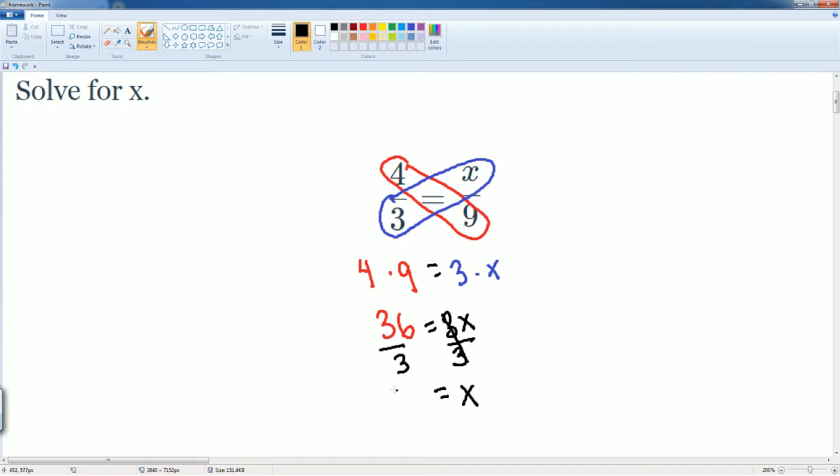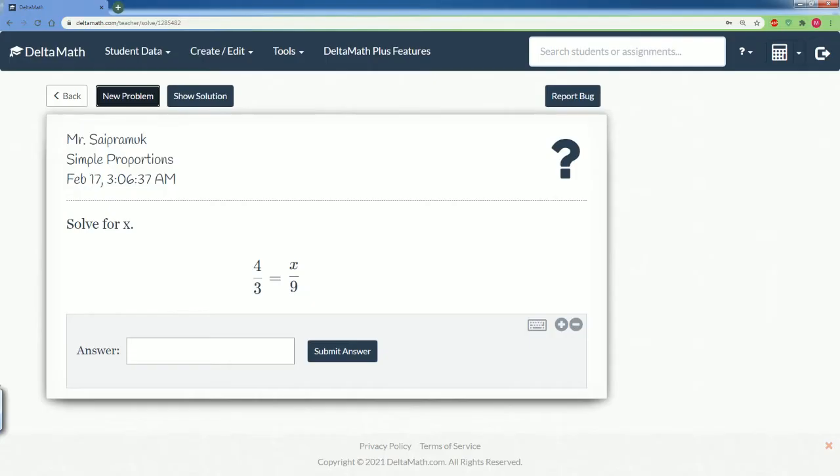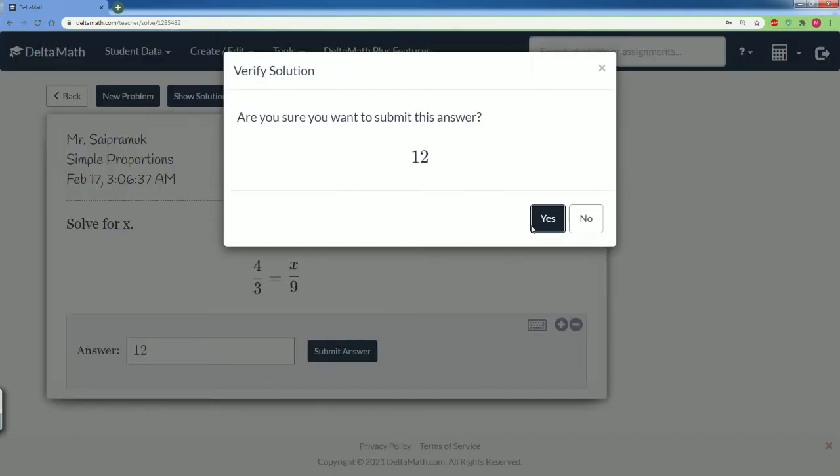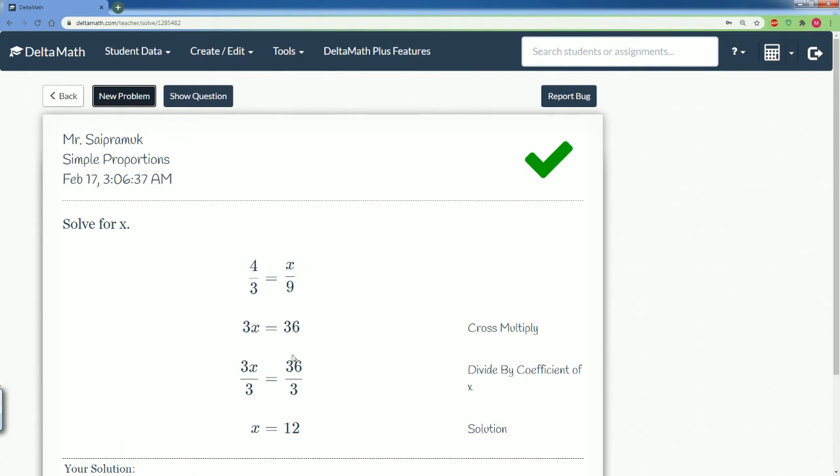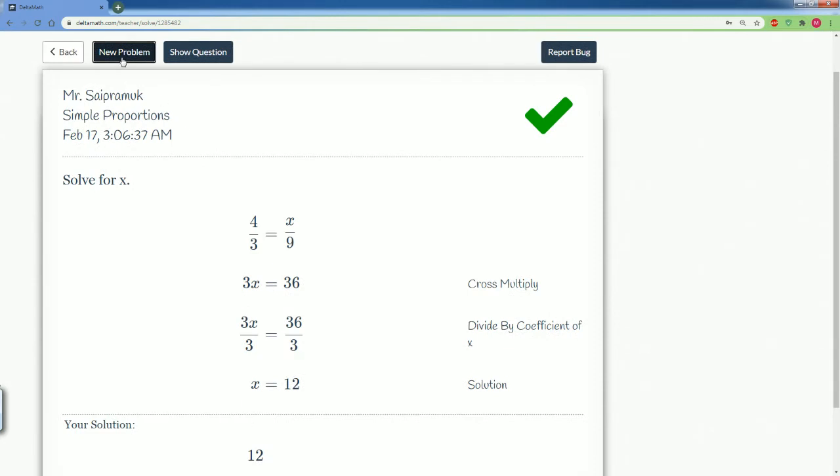36 divided by 3 gets you 12, so you can say 12 equals x. Let's enter 12 here and that is correct. Cross multiplying, then we divide by that coefficient in front of x. That gets us our solution.